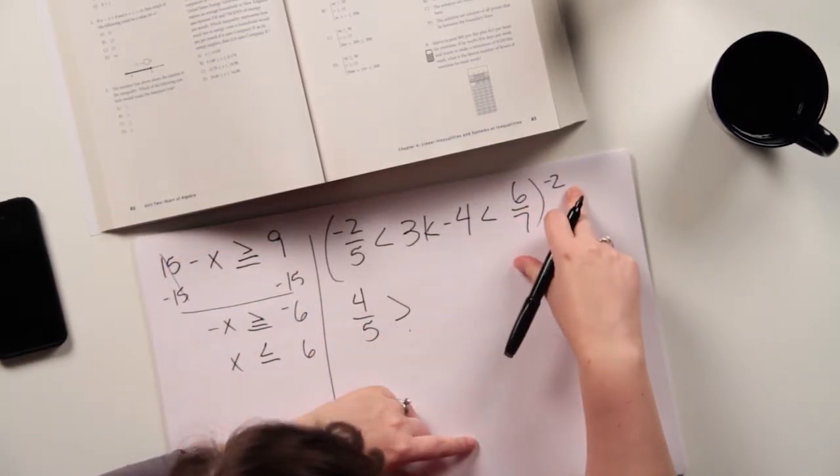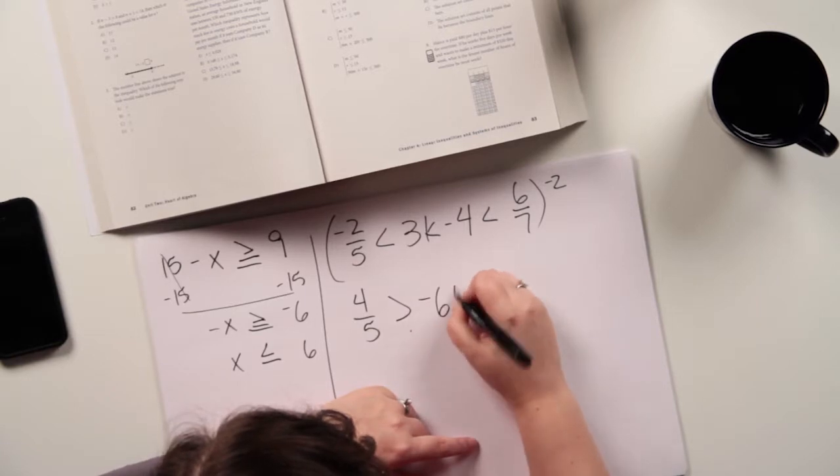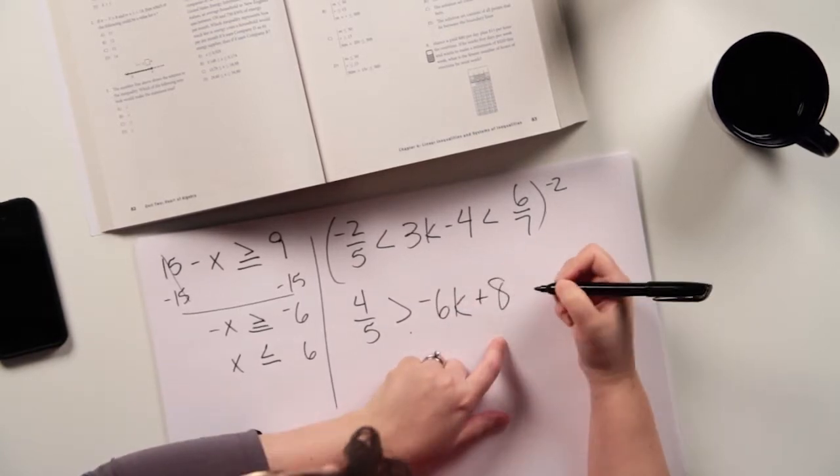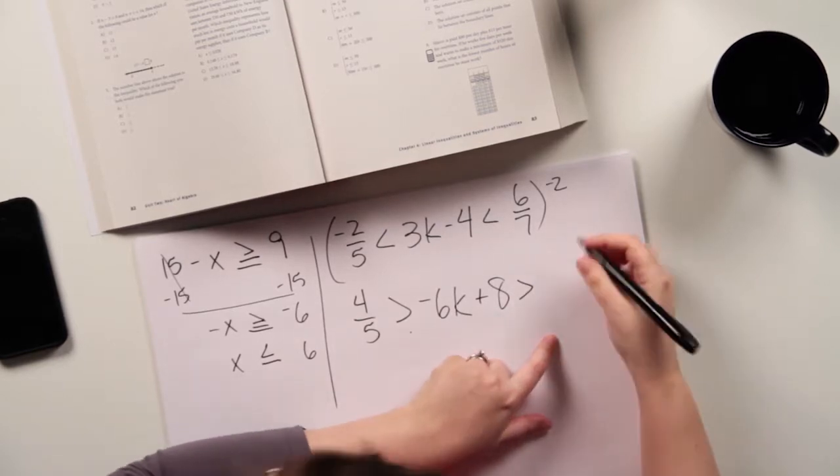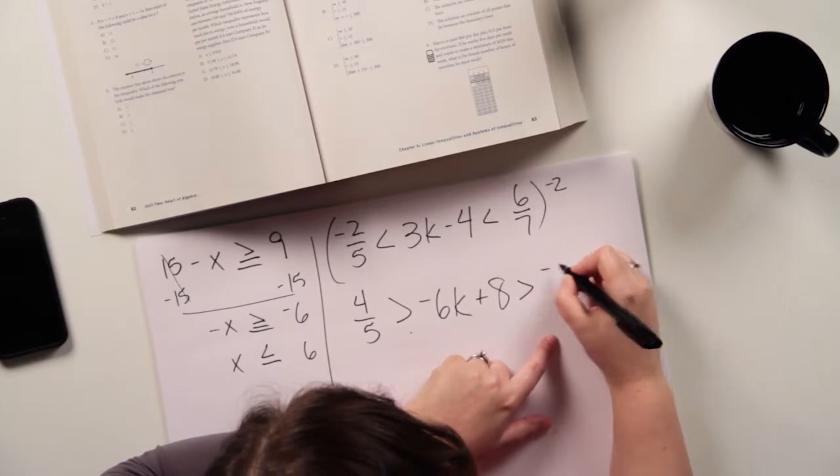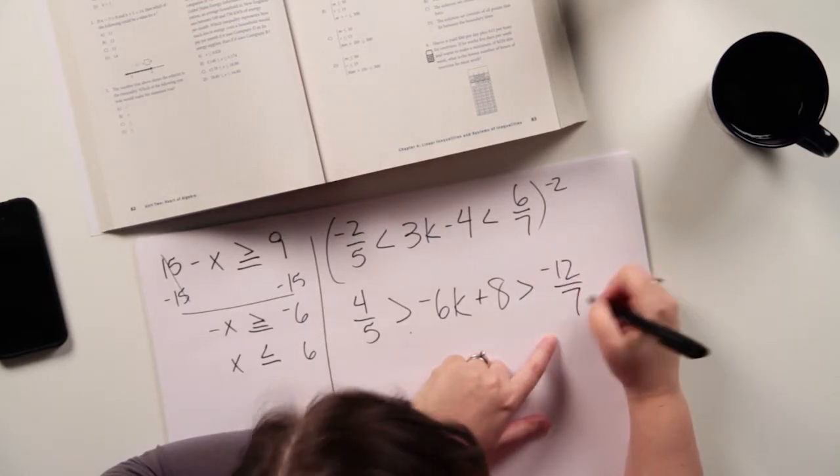negative 2 times negative 2 fifths is going to give me 4 fifths and greater than 3k minus 4 times negative 2 is negative 6k plus 8, which is what I was going for. Then flip my sign, and 6 sevenths times negative 2 is going to give me negative 12 sevenths.